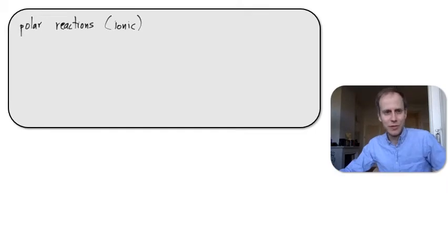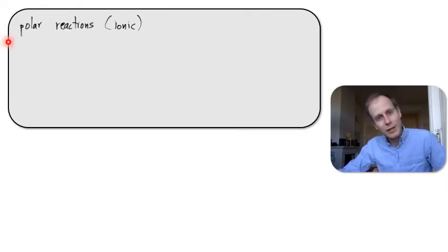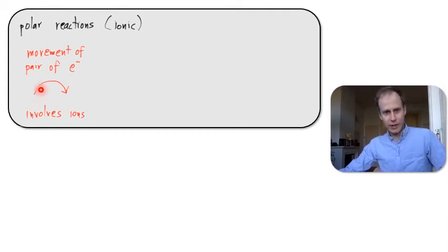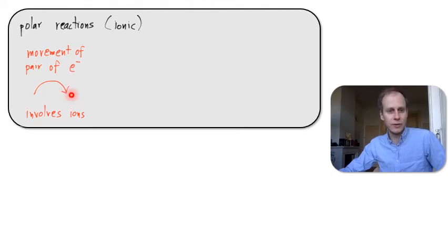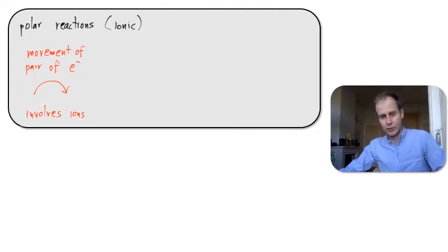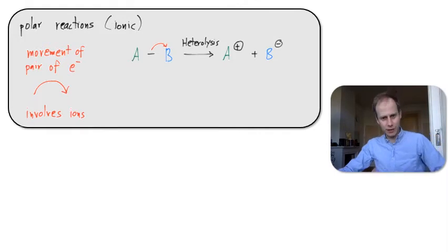Before we go into more details, let me make a few definitions. First, what are polar reactions or ionic reactions? For polar reactions we use this curly arrow notation — an arrow that has two lines at the head, and the two lines correspond to the movement of a pair of electrons, or two electrons. These polar reactions often involve ions.